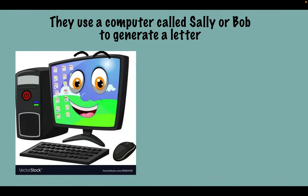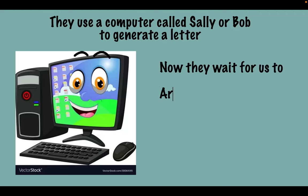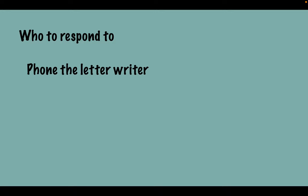Here's one of the tricks they use: they use a computer called Sally or Bob to generate a letter. Someone will walk past a computer and say generate letters, the computer spits out a load of letters, and those letters will come to you and me. They wait for us to argue, agree, or go silent — any one of those three things is an automatic contract. If we argue we're dishonoring their presentment; if we agree we get our wallet out and pay the fees, and they get a commission for it; or if we go silent, once again we have dishonored their presentment. So we're not going to do that — we're going to respond to them in a correct manner.